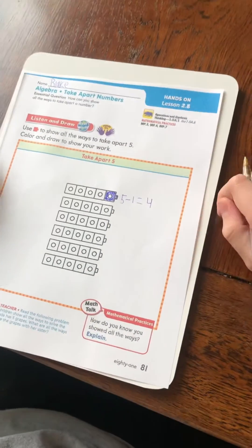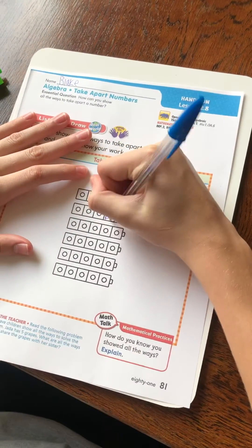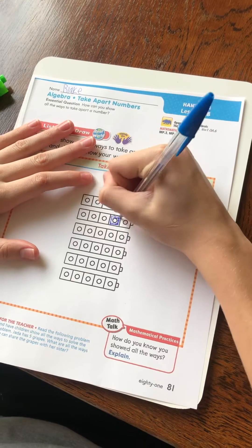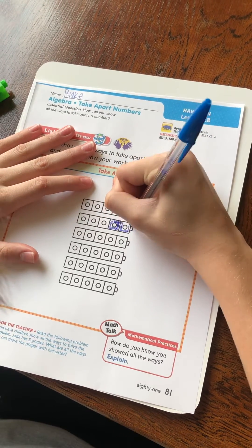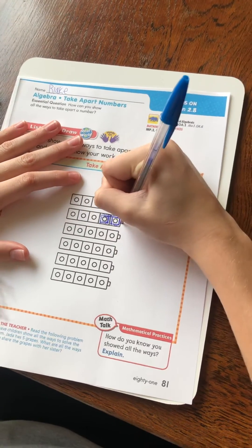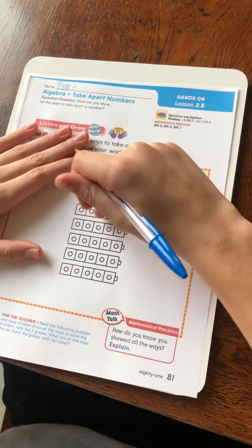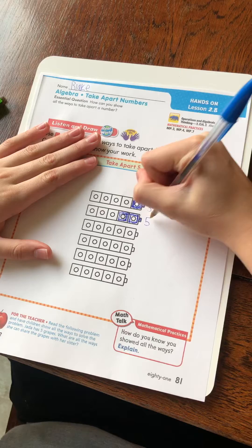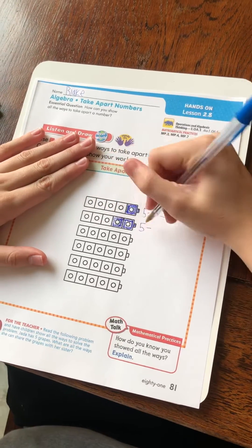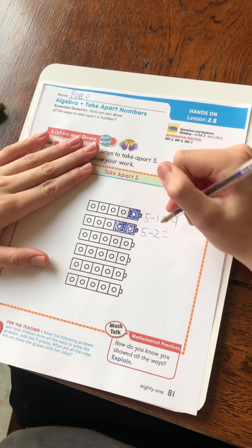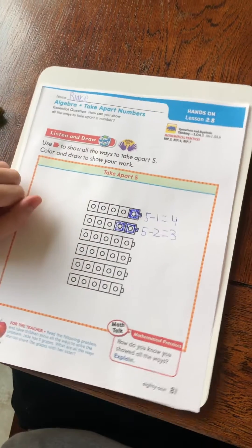So on the next one, let's color in two this time. Okay. One, two, three, four, five. Okay. Minus one, two equals three. Okay, let's do the next one.